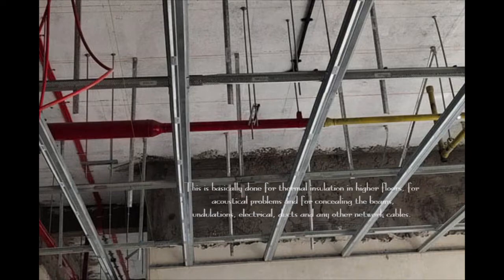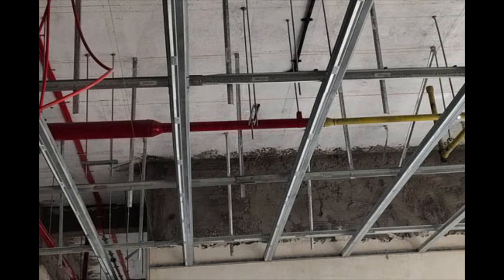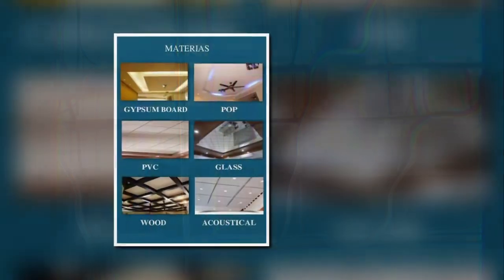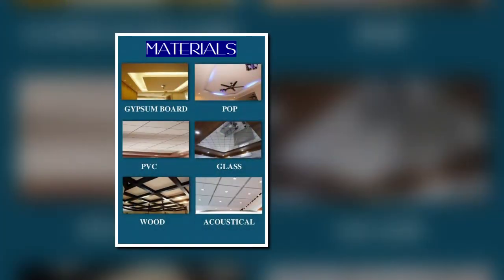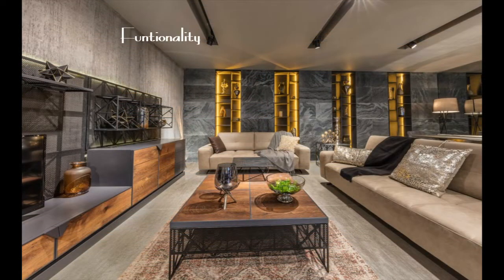Fall ceiling is done using different materials like gypsum board, plaster of Paris, fiber or PVC, wooden or laminate, glass, metal, and cloth or carpet. Although it is functional, nowadays fall ceiling has become an essential part of aesthetics in designing a house.